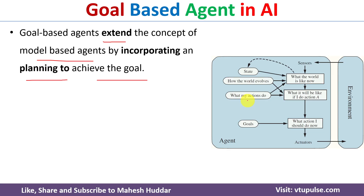In a model-based reflex agent, the AI agent maintains the experiences it has accumulated over a period of time in the form of an internal model. Whenever the sensor senses the current environment, it goes to the internal model and selects an action to be executed on the environment. The internal model is then updated based on those experiences. However, the model-based reflex agent does not consider the goal while selecting an action — that is what is missing.